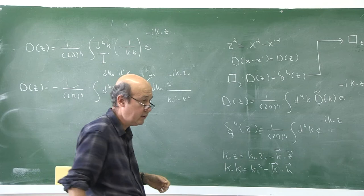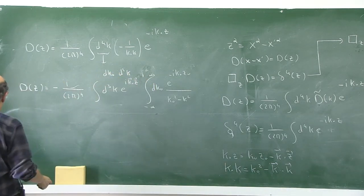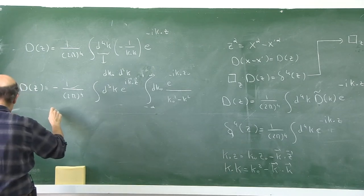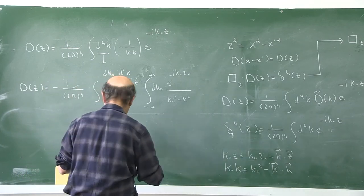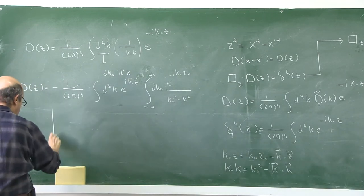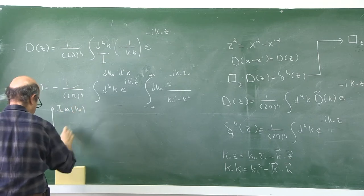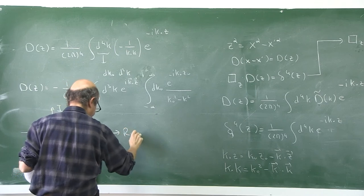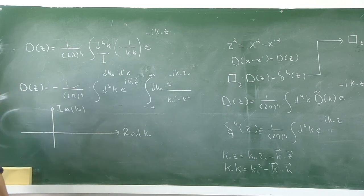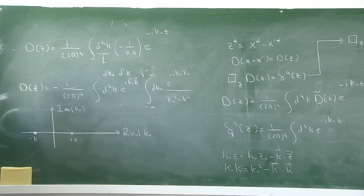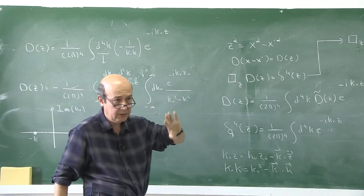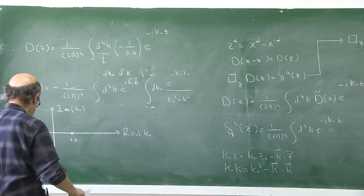The residues are at k⁰ = +k and k⁰ = −k on the real k⁰ axis. We have two possible contours — upper and lower half-plane — corresponding to the advanced and retarded Green's functions, respectively. One option is to shift the poles slightly up by iε and close the contour below; the other is to shift down by iε and close above.